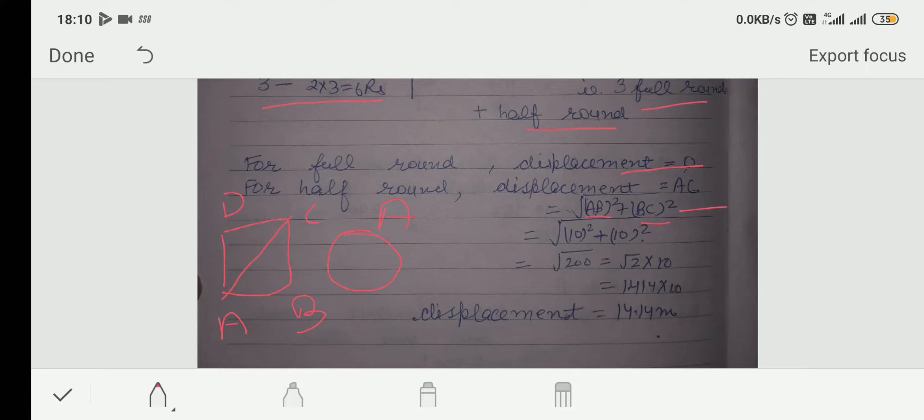Since, it is given in numerical that square field is of side 10 meter. So, I write 10 for AB, for BC also. So, I calculate this. 14.14. The value of under root 2 is 1.414 and if you multiply by 10, it will come 14.14.